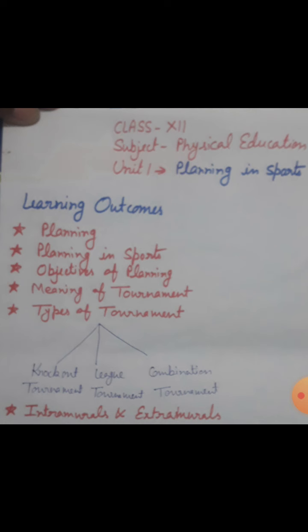The second type is the round robin or league tournament. The league tournament is also known as the round robin tournament. In this type of tournament, all teams play each other team irrespective of winning or losing. The third type is the combination tournament. The league and knockout tournaments can be joined to form a combination tournament.